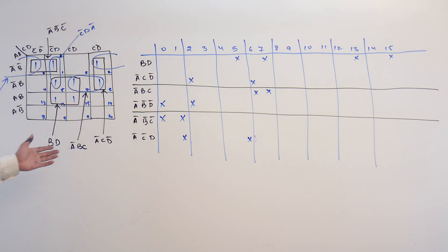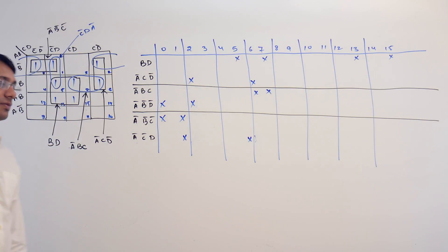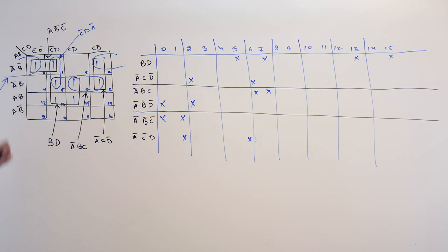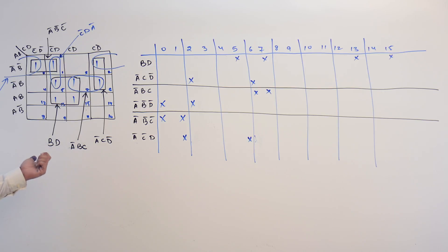Consider this K-map. We discussed this K-map in the previous videos. There are so many different implicants which are possible in this particular K-map. But in this particular K-map, what is an essential prime implicant?